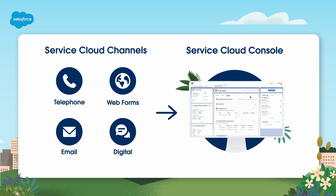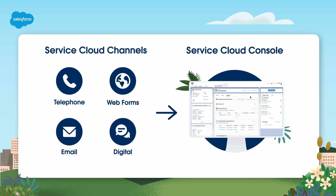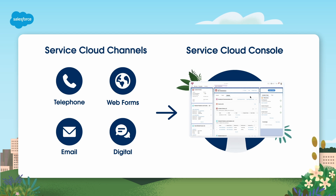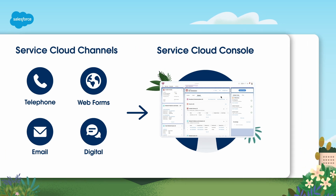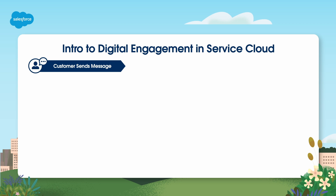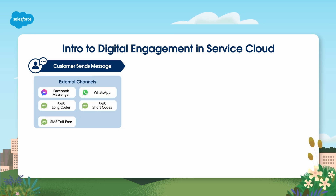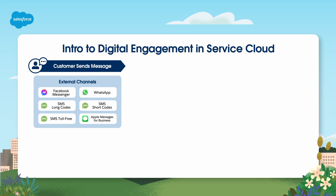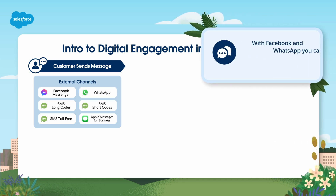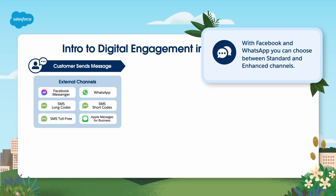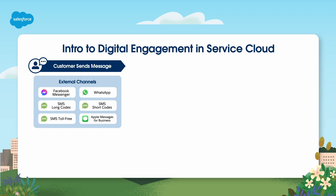Service Cloud allows you to handle cases from many different external and native digital channels. Let's walk through the life cycle of customer engagement. First, your customer sends a message. You can choose to accept messages from external services such as Facebook or WhatsApp, or their phone's SMS service, or Apple. With Facebook and WhatsApp you can choose between standard and enhanced channels depending on what features you need. Messages can be sent at any time and will go into a Service Cloud queue.